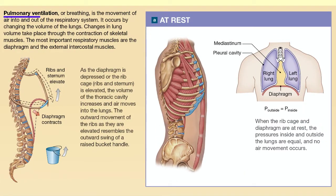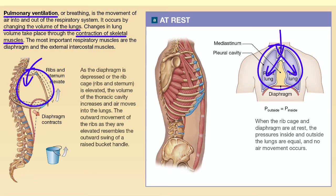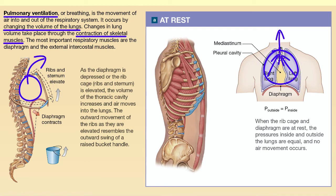In summary, pulmonary ventilation occurs through skeletal muscle contraction and relaxation, which changes the volume and therefore the pressure inside the thoracic cavity. Inhalation happens when the diaphragm and external intercostal muscles contract to increase volume and decrease pressure inside the lungs. Exhalation occurs when these muscles relax, decreasing volume and increasing pressure. Forced inhalation and exhalation employ a variety of accessory respiratory muscles.